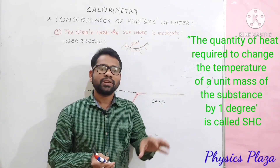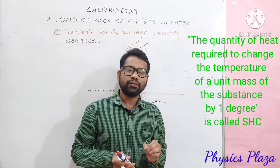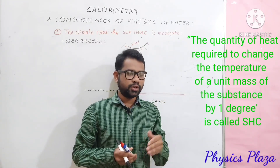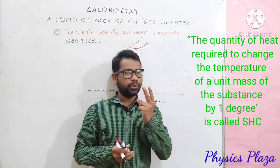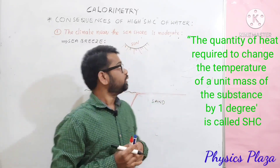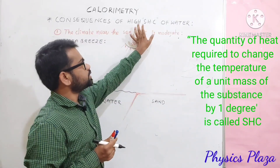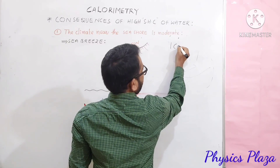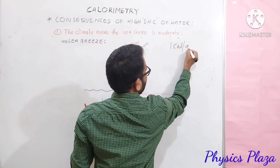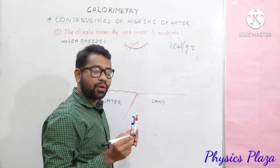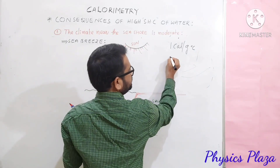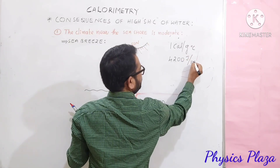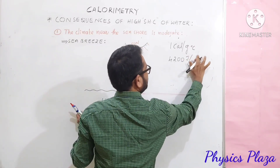Children, in today's session, we are going to discuss the consequences of high specific heat capacity of water. Before we get into the topic, we need to recall two things — it is very, very important. Water has high specific heat capacity, and its value is 1 calorie per gram degree Celsius in the CGS system, whereas in the SI system its value is 4200 joule per kg Kelvin.